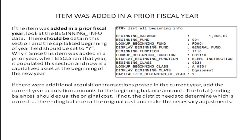This total ending balance should equal the original cost. If not, the district needs to determine which is correct — the ending balance or the original cost — and with help from the ITC, make the necessary adjustments. Please refer back to the video selection for other EIS 103 error videos. Thank you very much.